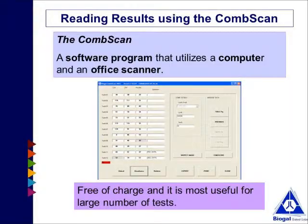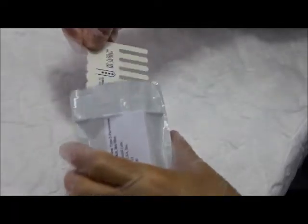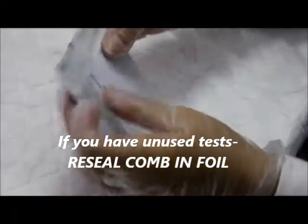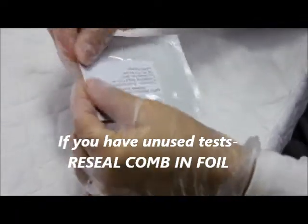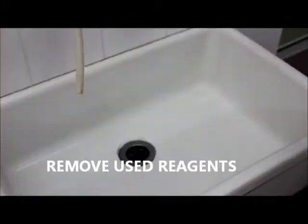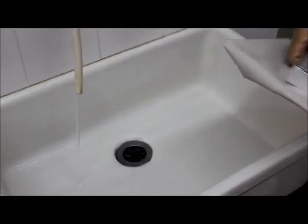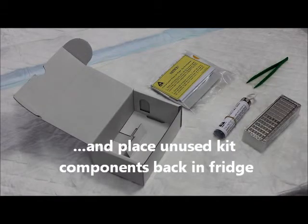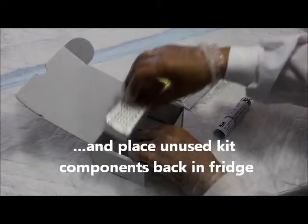Another way to read the results is by using the ComScan. This is a software program that utilizes a computer and a compatible scanner. This should only be used when very large volumes of tests are interpreted. Note that this interpretation is specific for the Immunicomb canine VaxiCheck antibody test kit. If you are using a different Immunicomb pet test kit, check the interpretation specific to that kit.